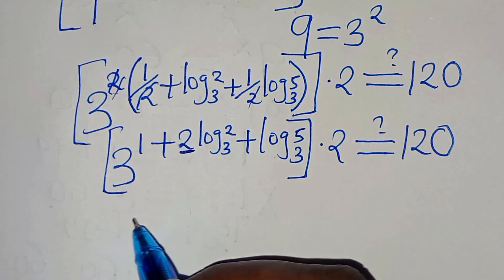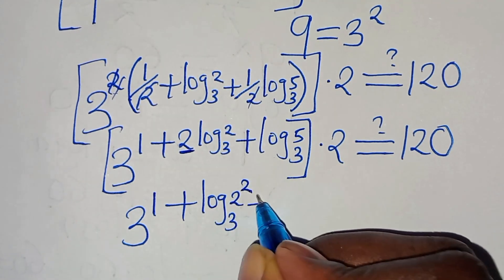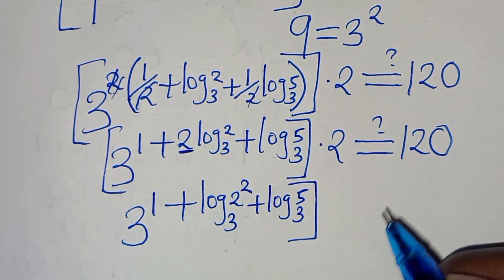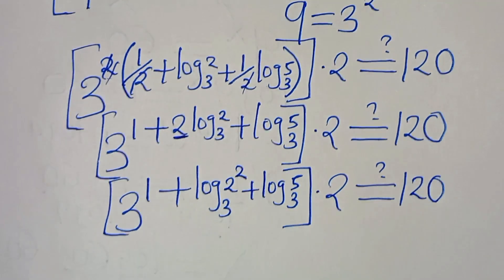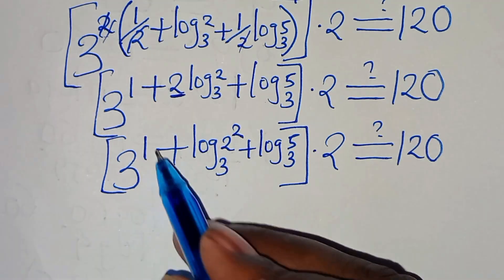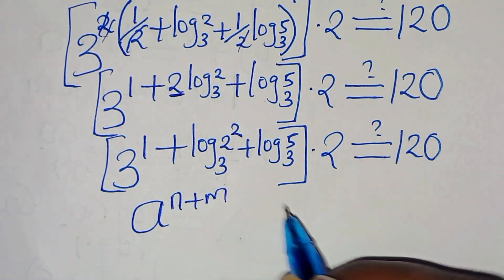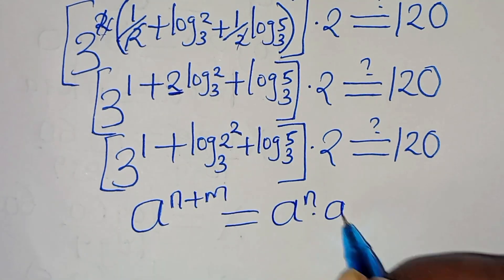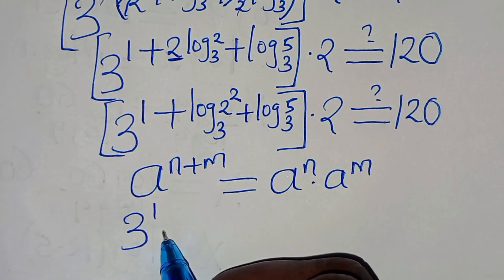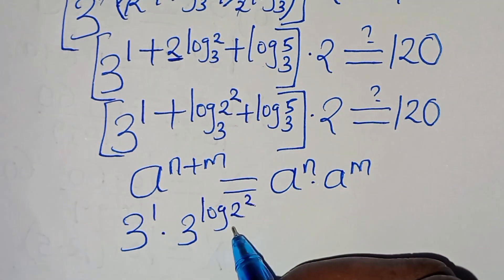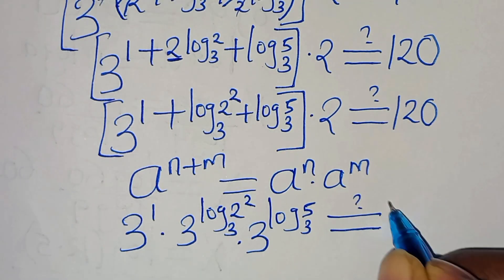Simplifying: 2 and 2 cancel, giving 3 to the power of 1 plus 2·log₃(2) plus log₃(5), multiplied by 2, which should equal 120. Now 3 to the power of 1 plus log₃(2²) plus log₃(5) is in the form a to the power of N plus M, which we can express as a to the power of N multiplied by a to the power of M. Applying this exponent property, we have 3 to the power of 1, times 3 to the power of log₃(2²), multiplied by 3 to the power of log₃(5), and this should give us 120.